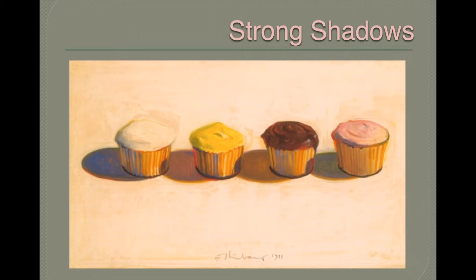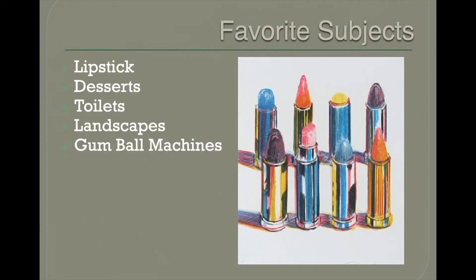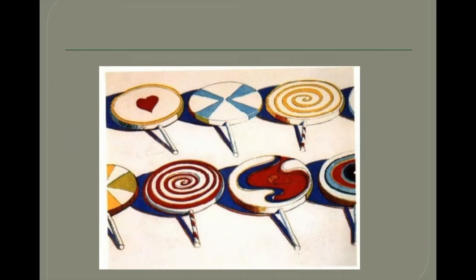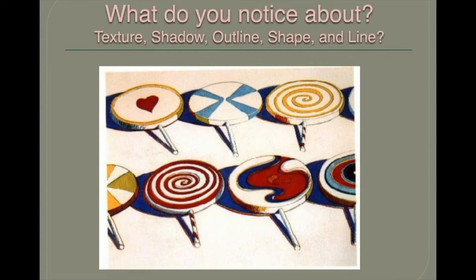Shadows are when there's the absence of light on one side because an object is blocking it. Let's pretend the sun is here on the right — there is no sun on this side, so that's why you see a shadow. His favorite subjects: he loved to paint lipstick, desserts, toilets, landscapes, and gumball machines.